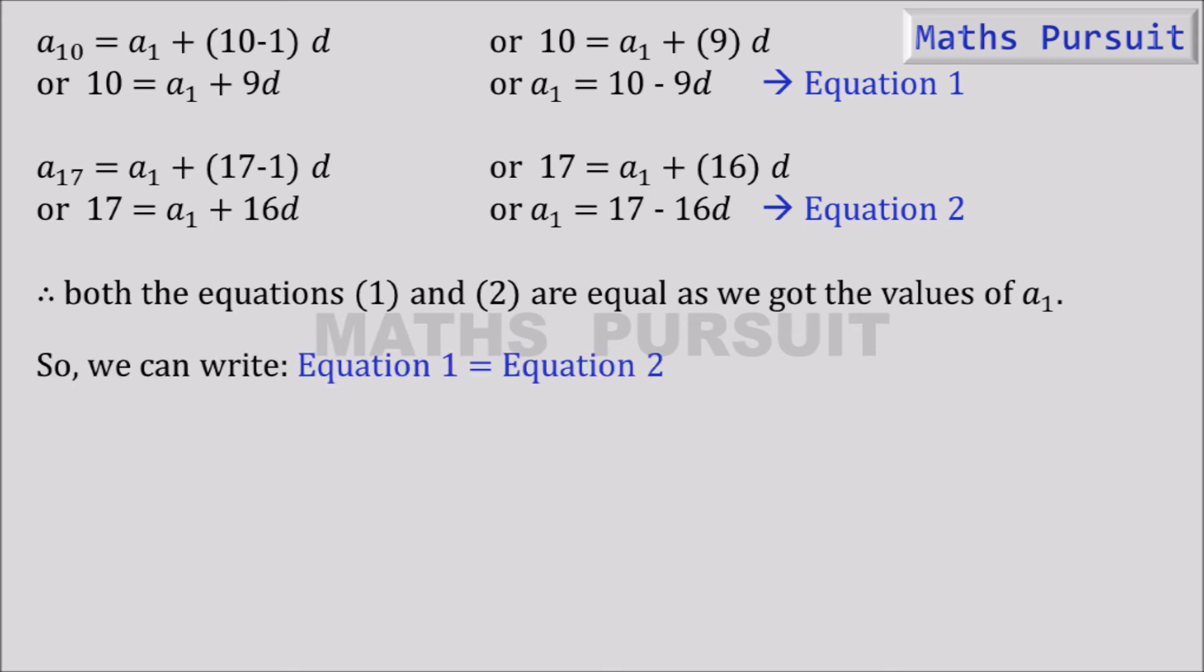Now replacing the values of equation 1 and equation 2, we get 10 minus 9d is equal to 17 minus 16d, or minus 9d plus 16d is equal to 17 minus 10. Just bringing all the d's to one side and bringing all the constant values to the other side.